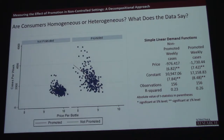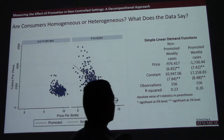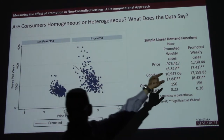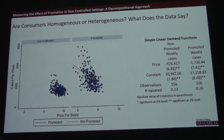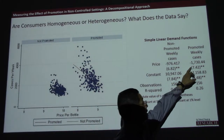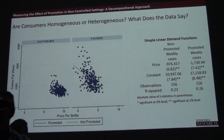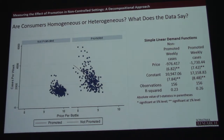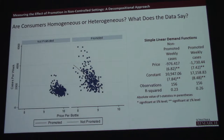We can also see from these price coefficients, which represent the slopes, that people who buy on promotion — the promoted weekly sales coefficient — is a lot more negative than the coefficient on non-promoted sales. That price coefficient literally represents price sensitivity. People that buy on promotion are more sensitive to prices than people that buy off promotion. If that's true, we can exploit that knowledge and try to optimize our promotional price-promotion mix.